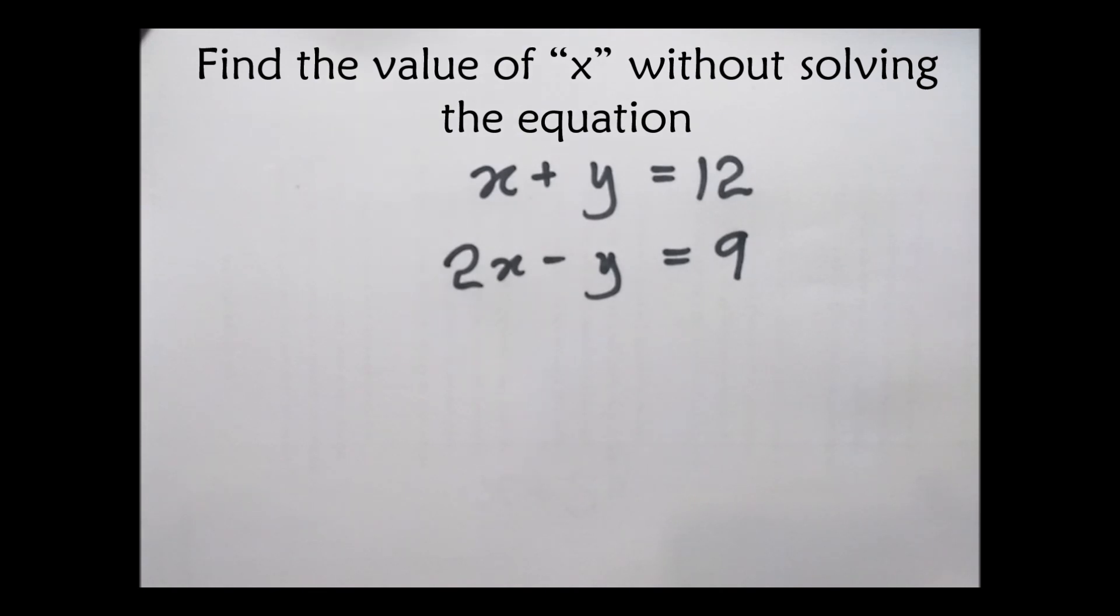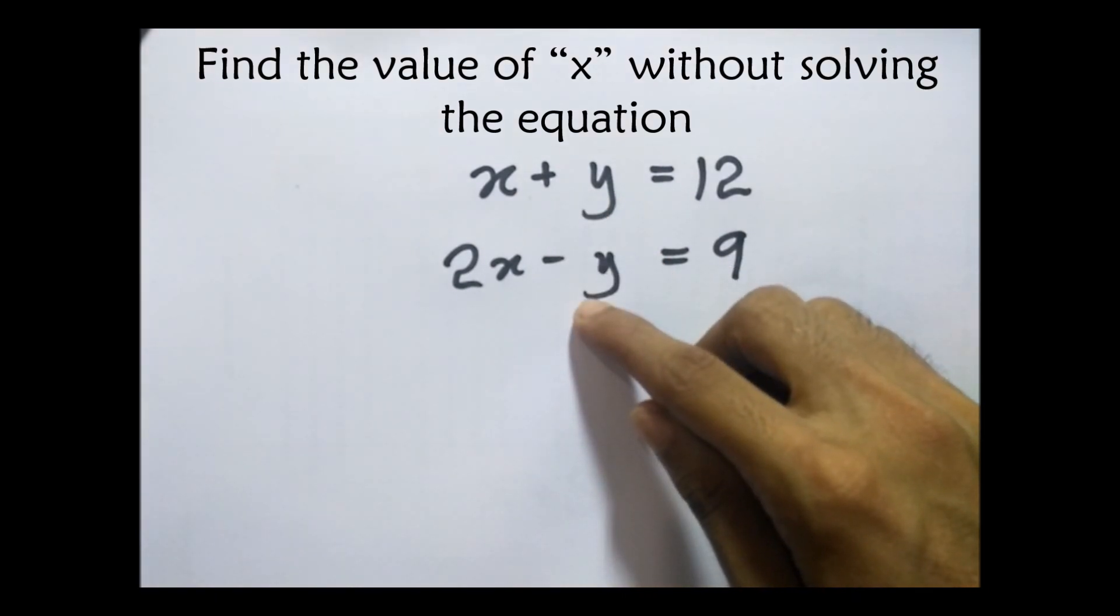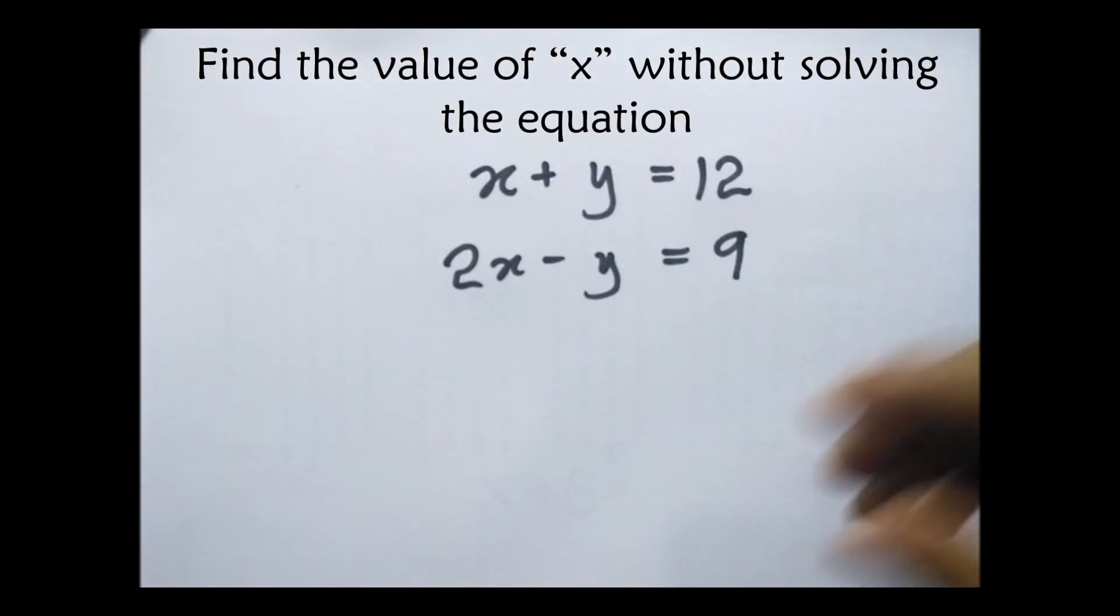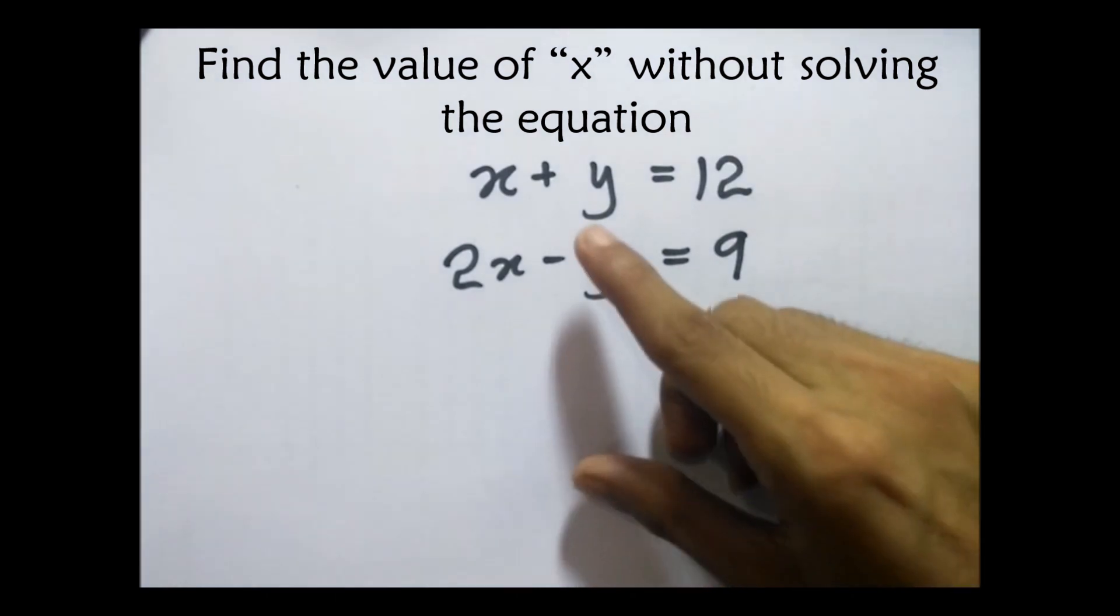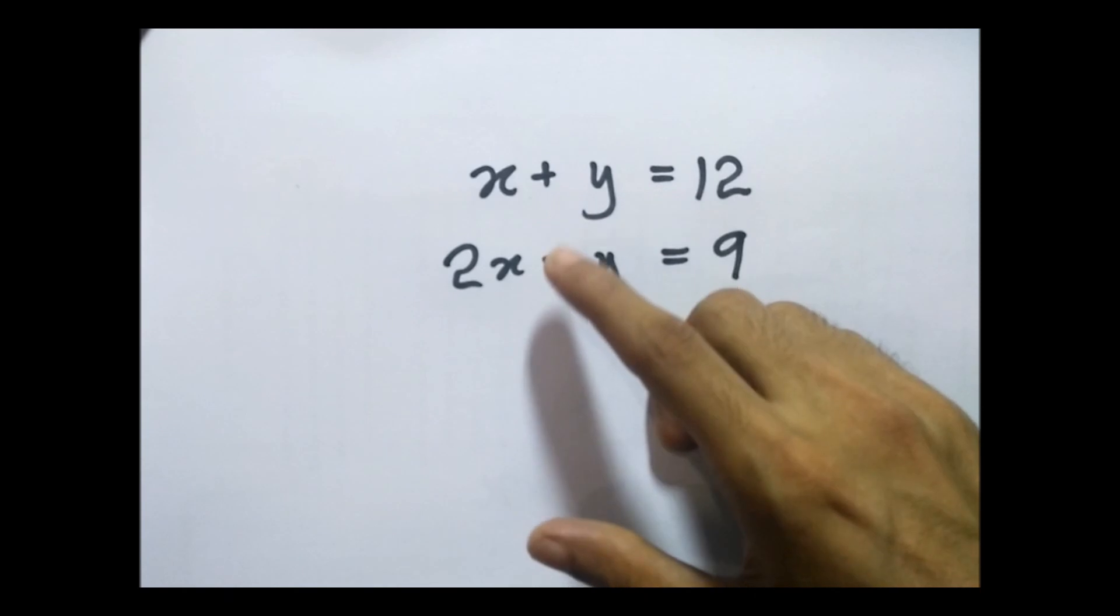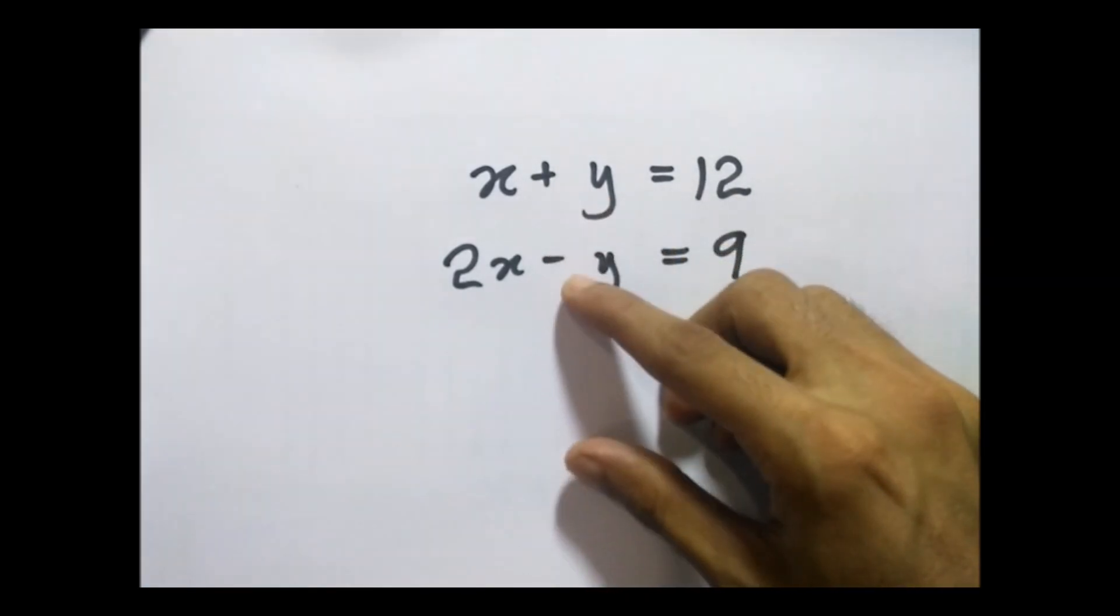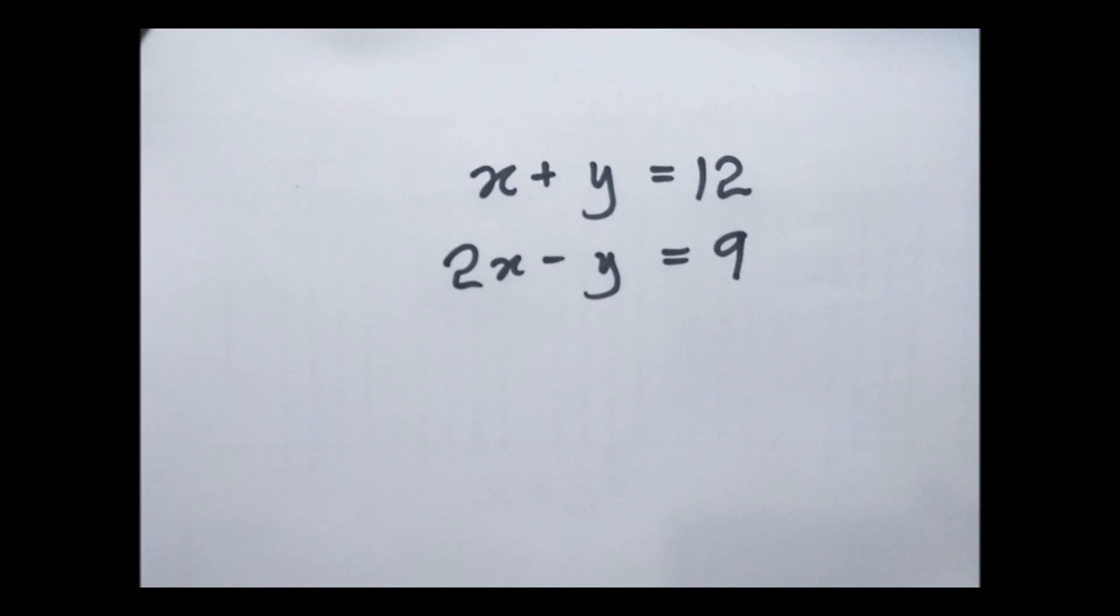It's better to cancel y because you can see both the coefficients are the same - both coefficients are 1. Now we can cancel this y easily. How do we cancel this y? First we have to consider the signs. Here both the signs differ. If the signs differ we have to add. If the signs are the same then we have to subtract. That's the theory.